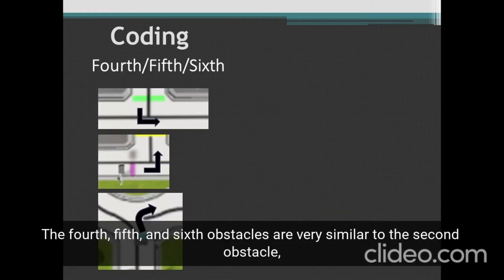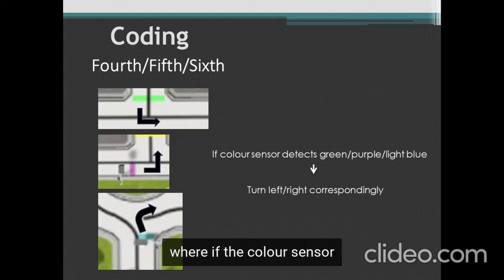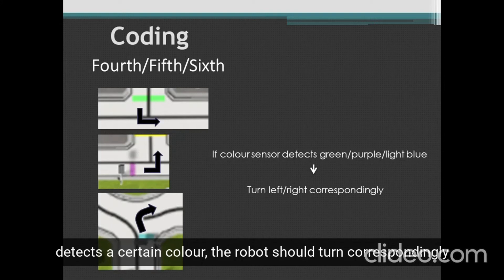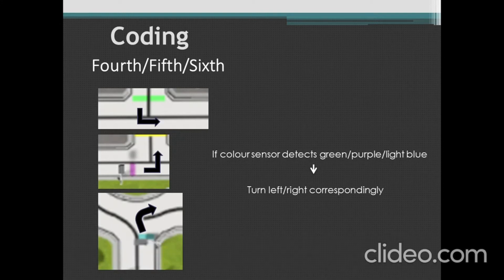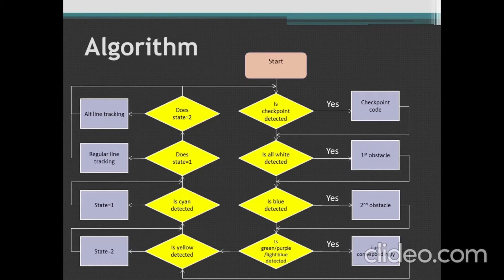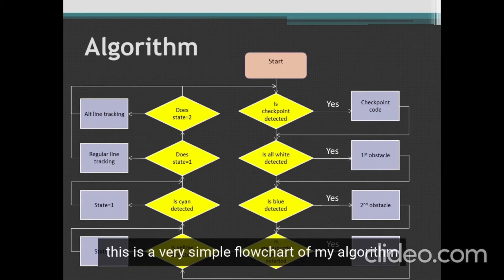The fourth, fifth, and sixth obstacles are very similar to the second obstacle, where if the colour sensor detects a certain colour, the robot should turn correspondingly. As shown here, this is a very simple flowchart of my algorithm.